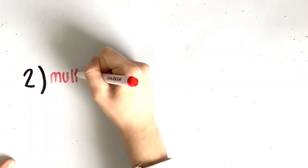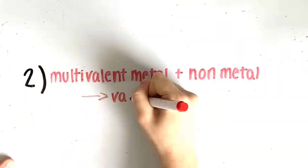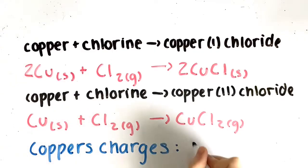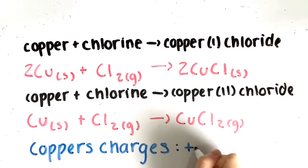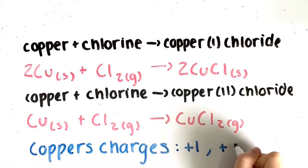Secondly, a multivalent metal reacts with a nonmetal to form various ionic compounds. For example, copper plus chlorine yields copper 1 chloride, and copper plus chlorine yields copper 2 chloride. This is because copper, as we mentioned, is multivalent — it has a charge of positive 1 and positive 2, therefore yielding two different results.